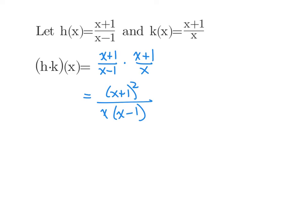But when we take a look at the domain, again, we see that we have our two pieces. One of them came from h, one of them came from k. And that is that x can't equal 0 and x can't equal 1.